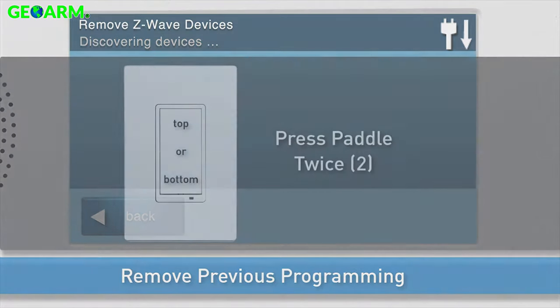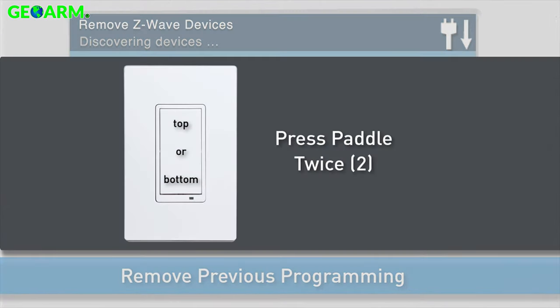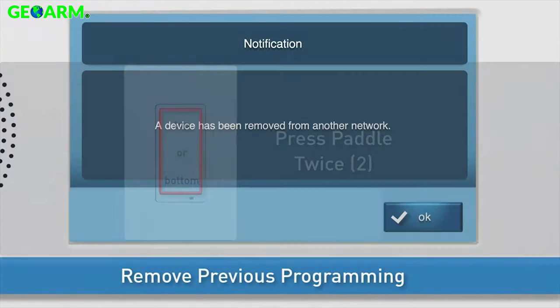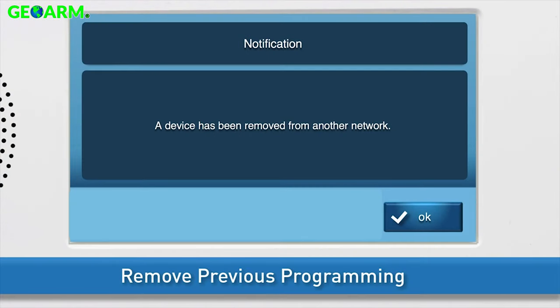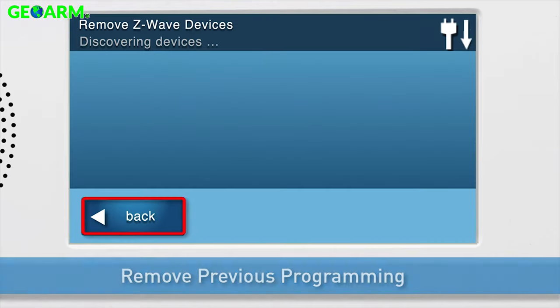Press either the bottom or the top of the paddle two times. You will see a notification on screen that the device was removed. Press OK, then press Back.